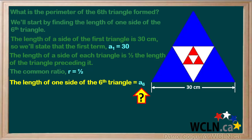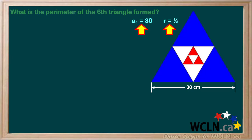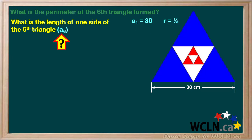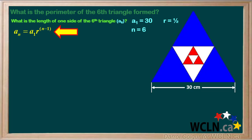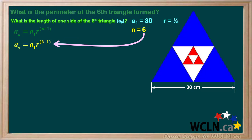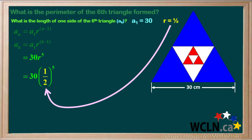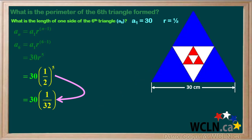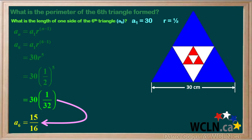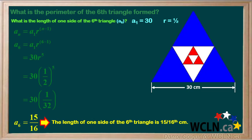The length of one side of the sixth triangle, which is what we're trying to find, we can call term A6. Recall that A1 equals 30 and R equals one half, and N equals 6. To find A6, we'll write the formula for the Nth term in a geometric sequence and replace each N with 6. A1 is 30 and the exponent 6 minus 1 equals 5. We'll replace R with one half. One half to the fifth power is 1/32. 30 over 32 simplifies to 15 sixteenths, so the length of one side of the sixth triangle is 15 sixteenths of a centimeter.